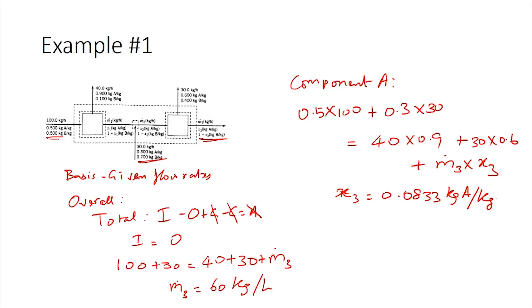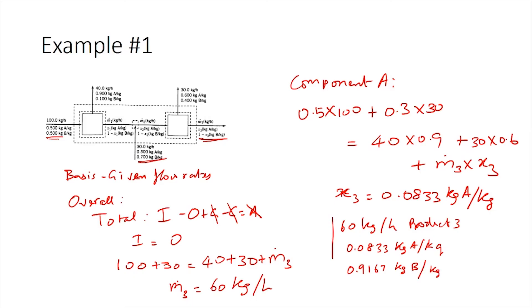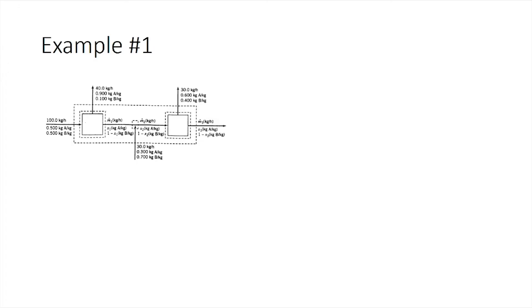Product stream 3 is therefore 60 kg/hr, containing 0.0833 kg A per kg and 0.9167 kg B per kg. Next, we calculate information for streams 1 and 2. We write a balance for unit 1 to get stream 1 information.